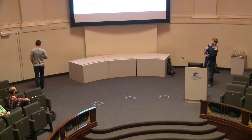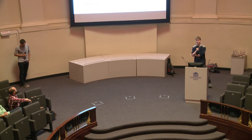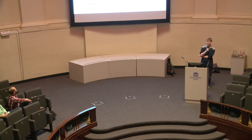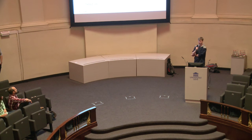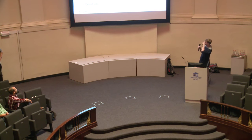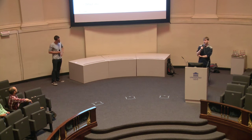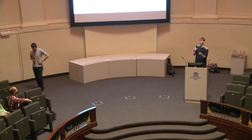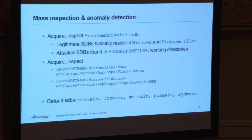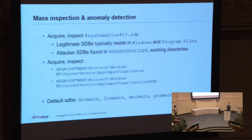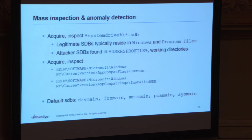One way is to acquire all the SDBs on a system. Normally legitimate ones are stored in their own program files directory. Windows has its own app patch directory with all its databases. Some of the ones found in the wild actually used the user's profile environment variable as their working directory — that kind of stuck out as a sore thumb. You could also inspect the two registry keys showing what has actually been registered. There's a list of default databases — all the ones with 'main' are typically the ones the OS uses.